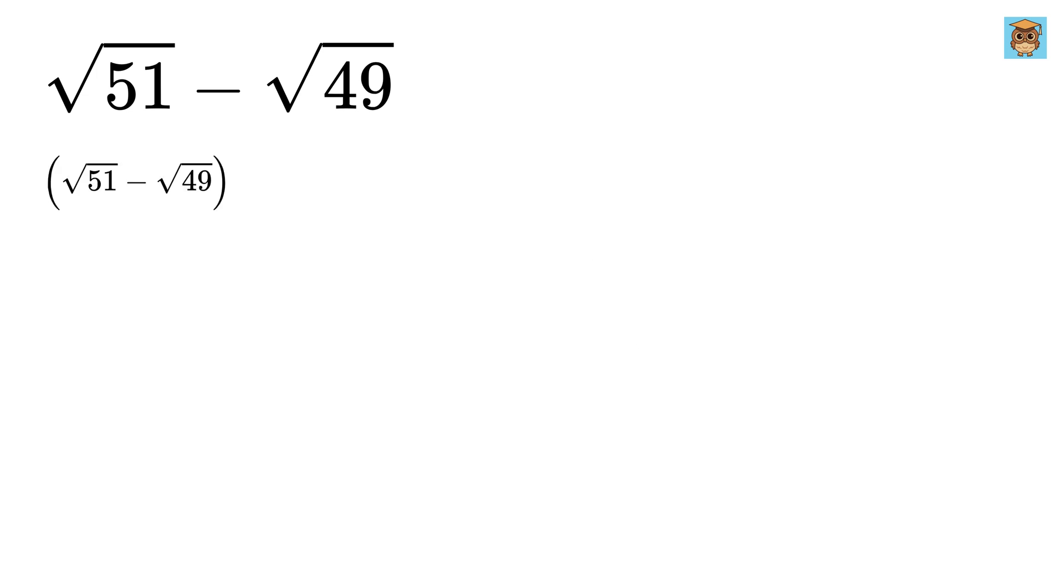Multiply both numerator and denominator by the square root of 51 plus the square root of 49. This way we will have plus in here instead of minus.